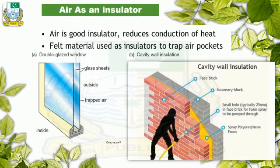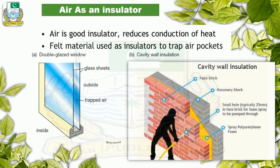Air is a good insulator and reduces the conduction of heat — it does not allow heat to pass. In a double glazed window, air is trapped between two panes of glass and does not allow heat to pass from outside the house, keeping the room cool and soundproof. Similarly, between the cavity of walls, spray foam is used to keep houses cool — it's a modern technology.